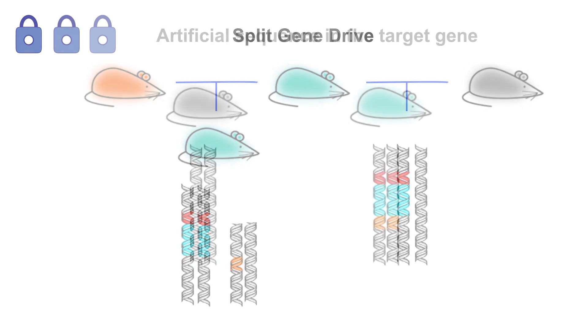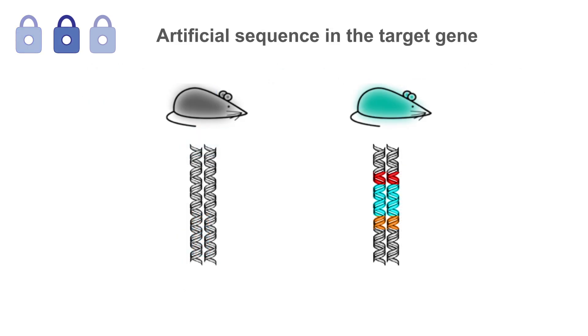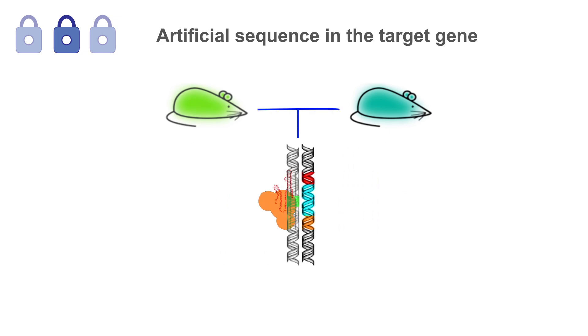The second safeguard is to insert an artificial sequence in the target gene of the laboratory organism. The gene drive is then constructed using guide RNAs that direct Cas9 to cut only the artificial sequence, so it only works in the engineered laboratory organism, but not the wild population.